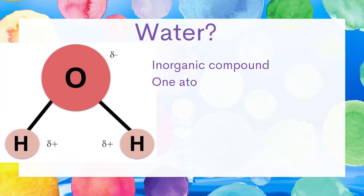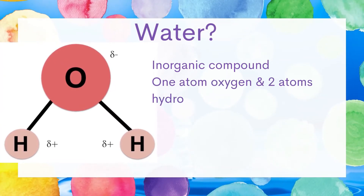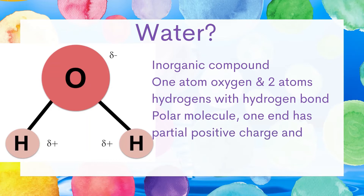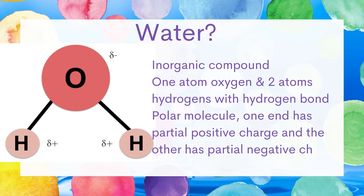Now we look at the structure of water. What is water? Water is an inorganic compound. It consists of one atom of oxygen, as you can see in the diagram with the label O, and two atoms of hydrogen with the label H. These atoms are bonded with hydrogen bonds. Water is a polar molecule, meaning one end has a partial positive charge at the hydrogen atom, and the other has a partial negative charge at the oxygen atom.